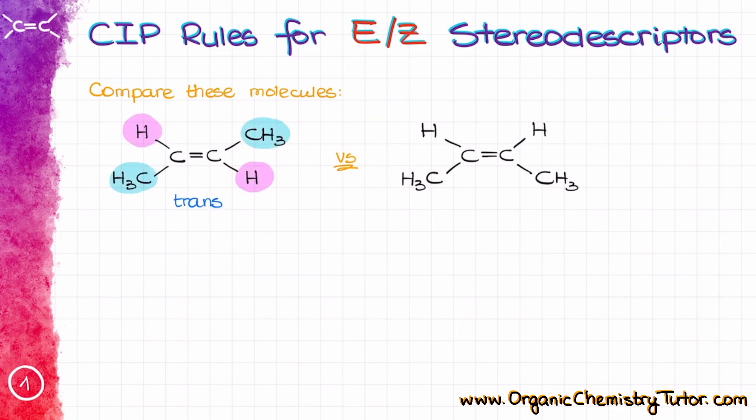The left molecule has the CH3 groups across from each other and likewise the hydrogens are across from each other in the molecule as well. Molecules like that we call a trans isomer. The right molecule has the methyl groups on the same side and the hydrogens likewise are on the same side of the molecule as well. We call molecules like this a cis isomer.